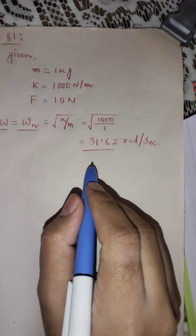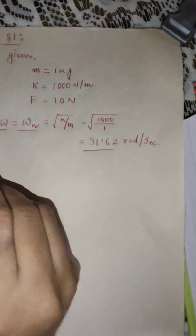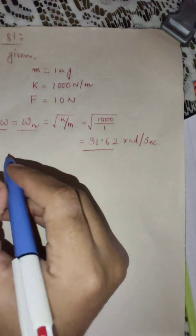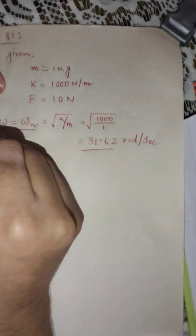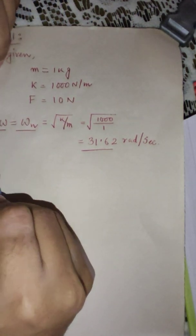Now the next part that we need to calculate is the phase angle at resonance. This was the first part A. Now the second part is phase angle at resonance.